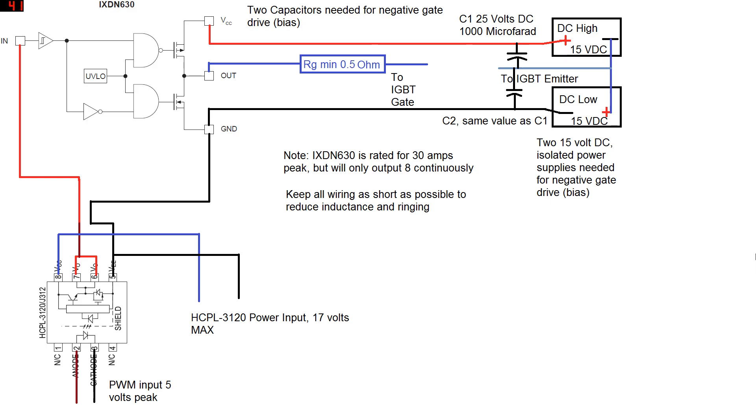Here's my recommended setup for the iXDN630. Now again, if you want to have isolation between your pulse output and the gate driver, you need to use HCPL3120 or an equivalent optical isolator. Now HCPL3120, of course, needs a power input, no less than 13 volts. I wouldn't recommend any more than 17 volts. Now the output of HCPL3120 goes directly to the input of iXDN630. The datasheet will tell you the pinout for these, and of course the ground just goes to the ground.